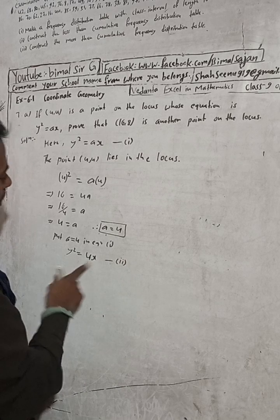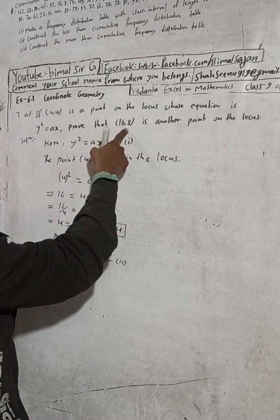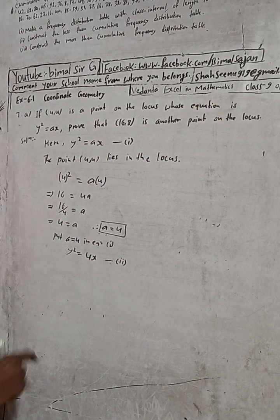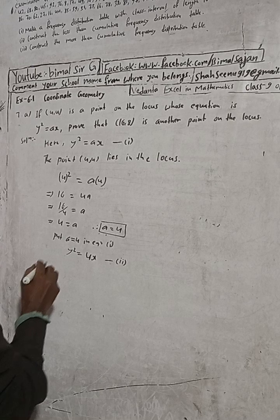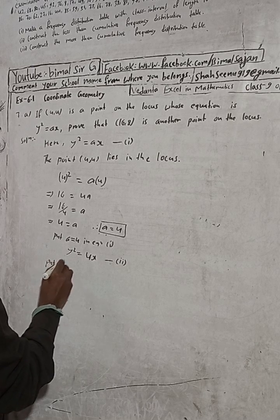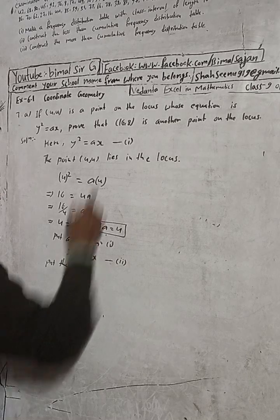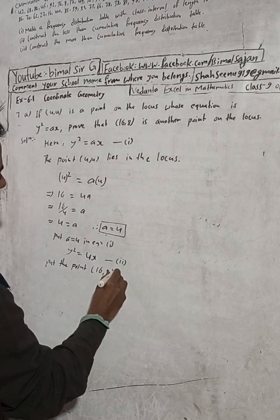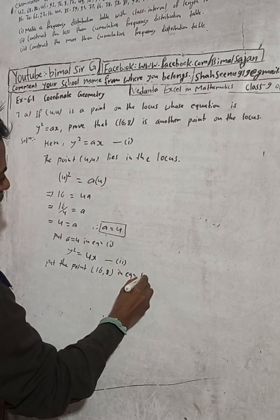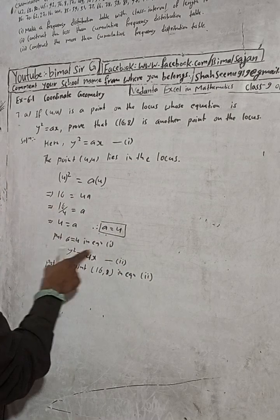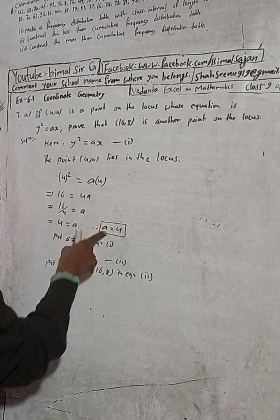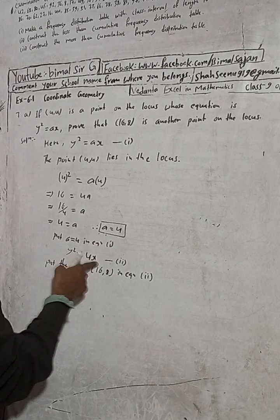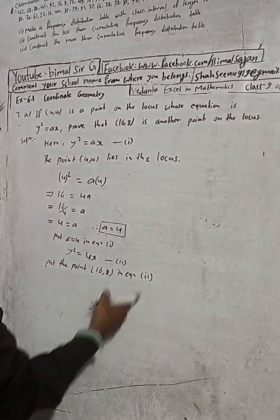Now we have to prove that (16, 8) is a point on the locus. To prove this, we put the point (16, 8) in equation 2. We used equation 1 to get the value of a, and now after getting the value of a, equation 2 is our working equation. So now in equation 2, put the point (16, 8).